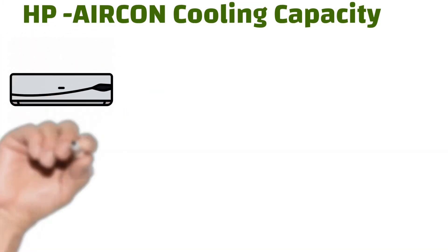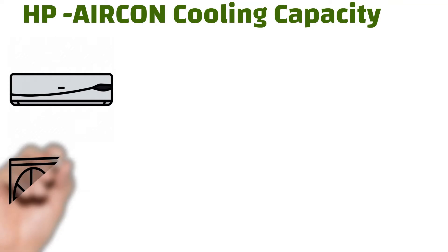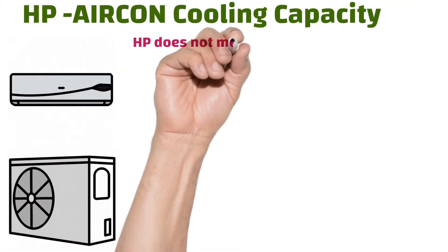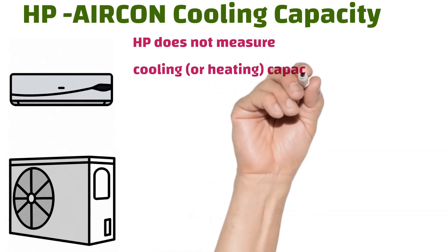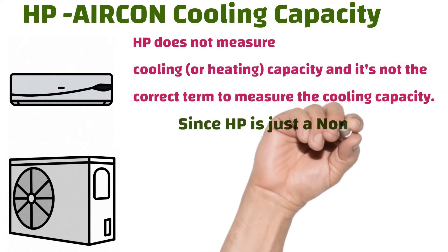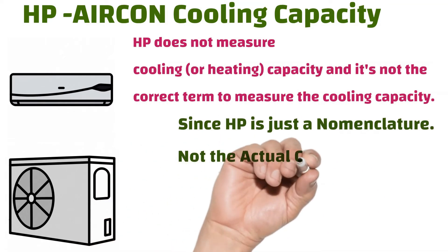Horsepower in air conditioning cooling capacity. Horsepower does not measure cooling or heating capacity and it's not the correct term to measure the cooling capacity. Since horsepower is just a nomenclature, not the actual capacity.